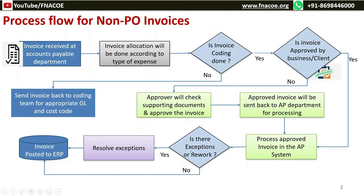During processing, if there is an exception, the exception work has to be resolved. If there is no exception, it goes directly to the ERP system for payment and processing. In case the invoice is not approved by the client or the business, it has to go to the approver through the workflow system to check the supporting documents and get approved. Once approved, the invoice will be keyed by the AP department for processing. That's a high-level view of how a non-PO invoice moves from one level to another within the AP system.